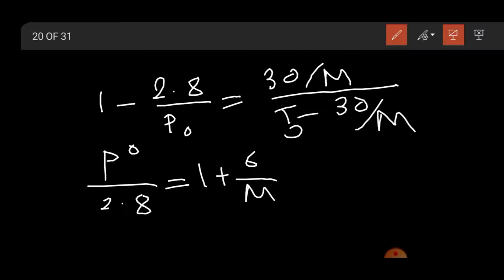From here I got Po by 2.8 equal to 1 plus 6 by m.